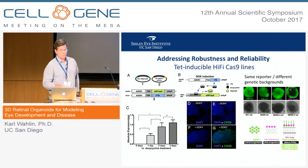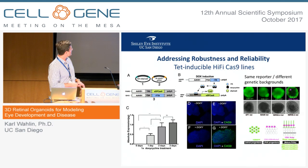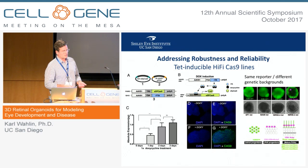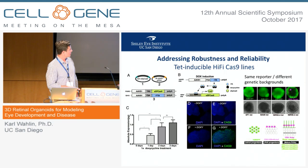In terms of addressing robustness and reliability, everything I just described was with one cell line, and one could argue these results could be specific to that cell line. So we're expanding our studies. We've generated a variety of high-fidelity, TET-inducible, CAS9-expressing cell lines. When we add doxycycline, CAS9 turns on and we can make genomic changes much more readily. We've now rolled out three additional SIX6-GFP lines in different genetic backgrounds.